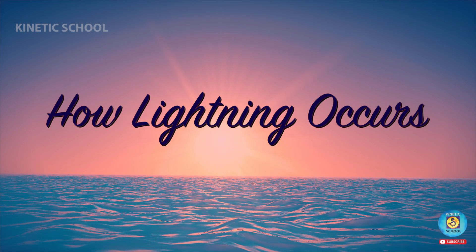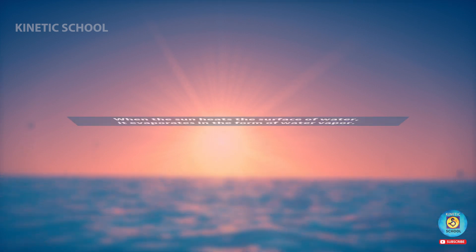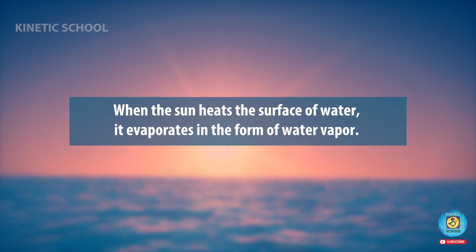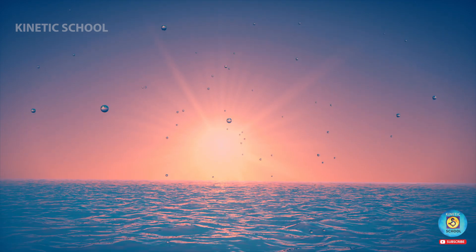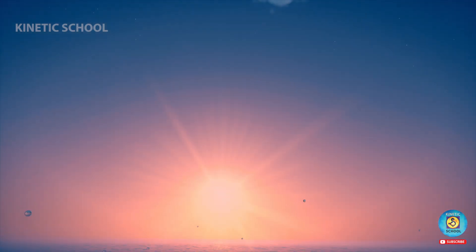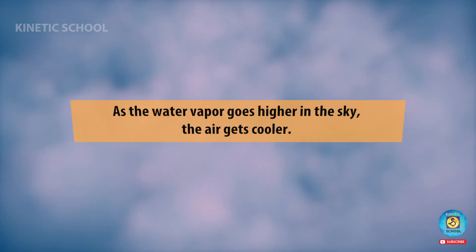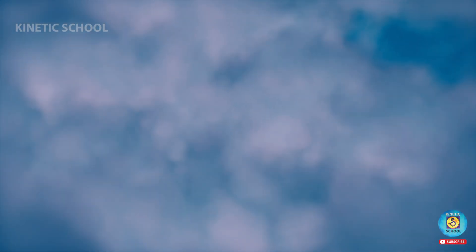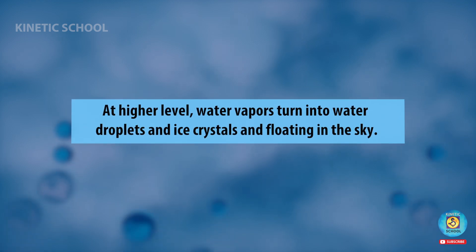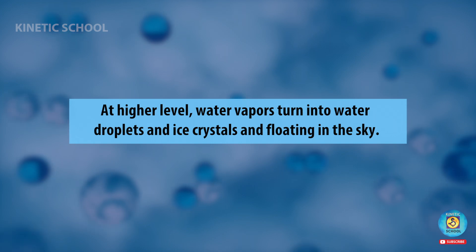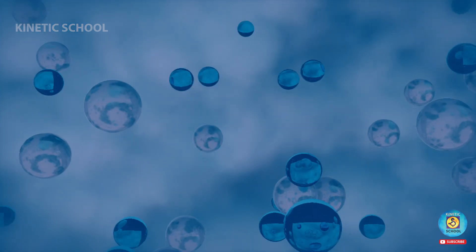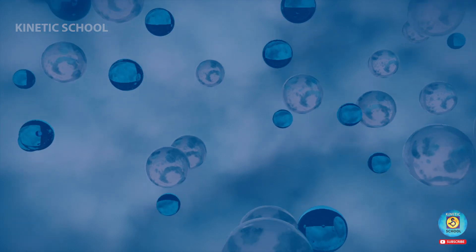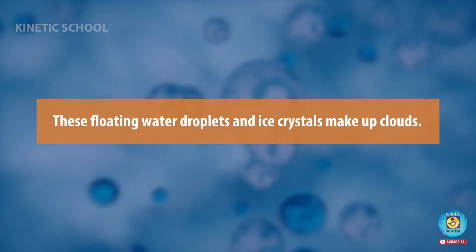How lightning occurs: when the Sun heats the surface of water, it evaporates in the form of water vapor. As the water vapor goes higher in the sky, the air gets cooler. At higher levels, water vapors turn into water droplets and ice crystals floating in the sky. These floating water droplets and ice crystals make up clouds.